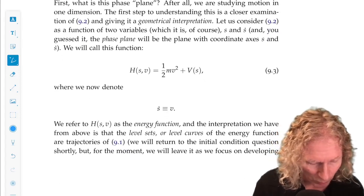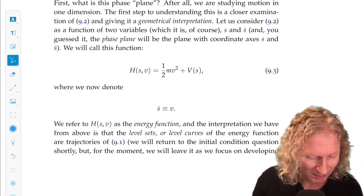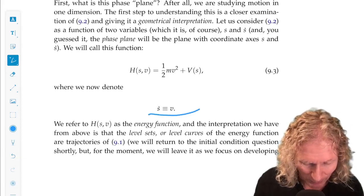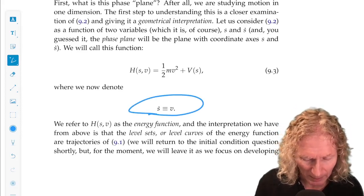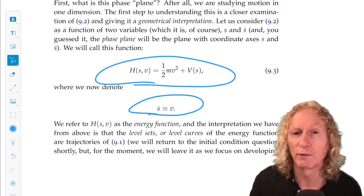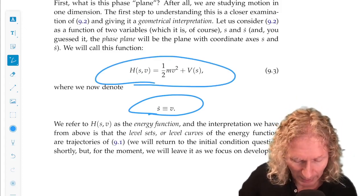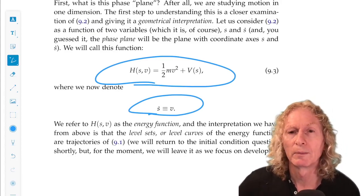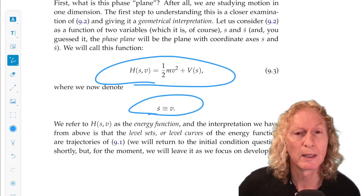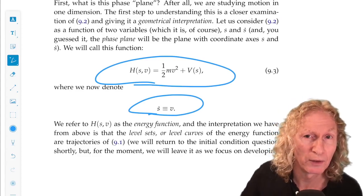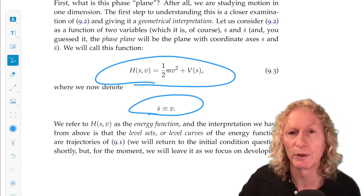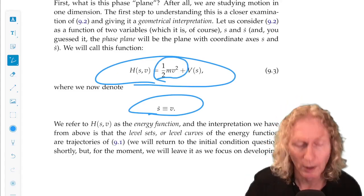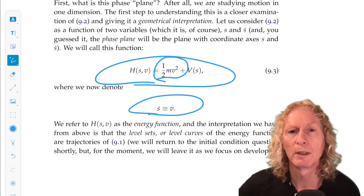So in order to make s dot look like a more normal variable, we're going to redefine it as s dot equals v. And here's our energy function h of s, v: one half mv squared plus V of s. So the phase plane is a position velocity plane, or you could call it the position momentum plane if you rewrote kinetic energy as p squared over 2m, where p was mv.